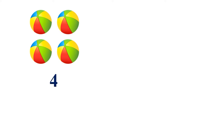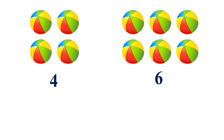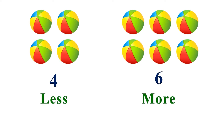Here, on the left-hand side, we have 4 balls, and on the right-hand side, we have 6 balls. So, which number is small or less? Yes, 4 is less and 6 is more. That means 4 is a small number and 6 is a big number.